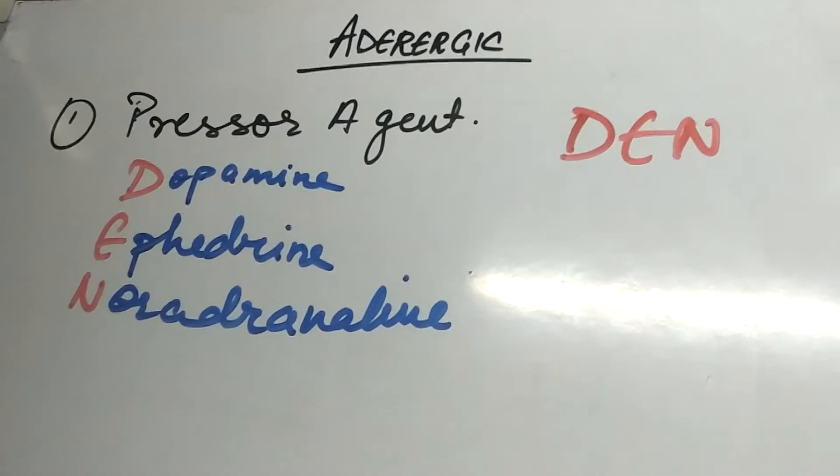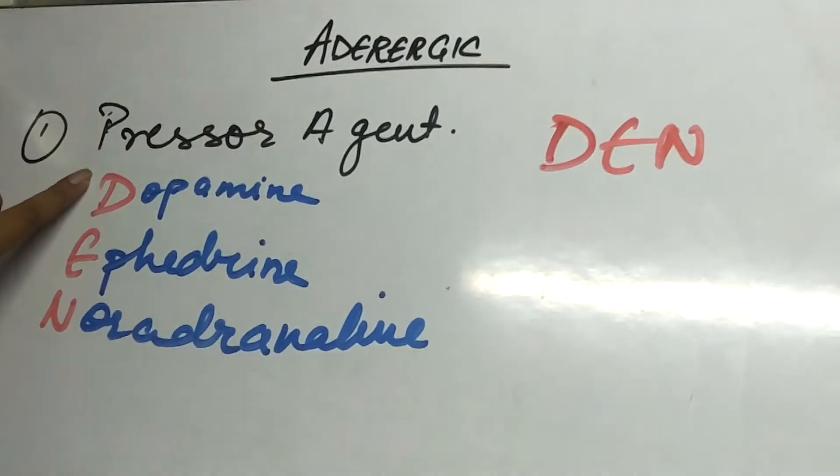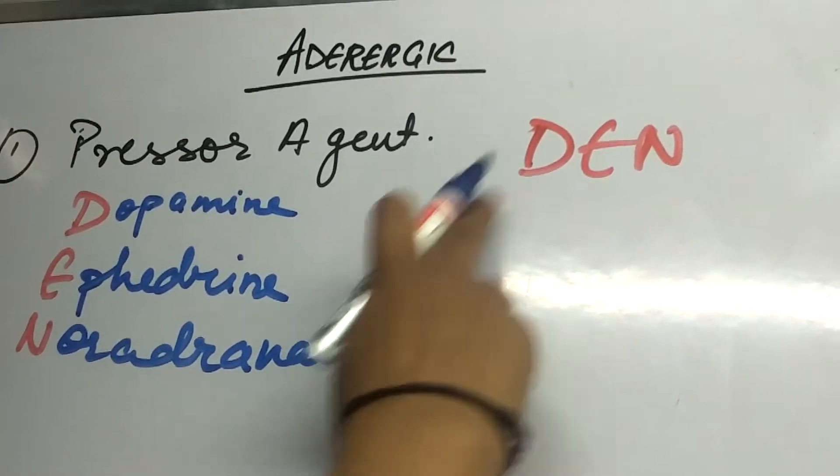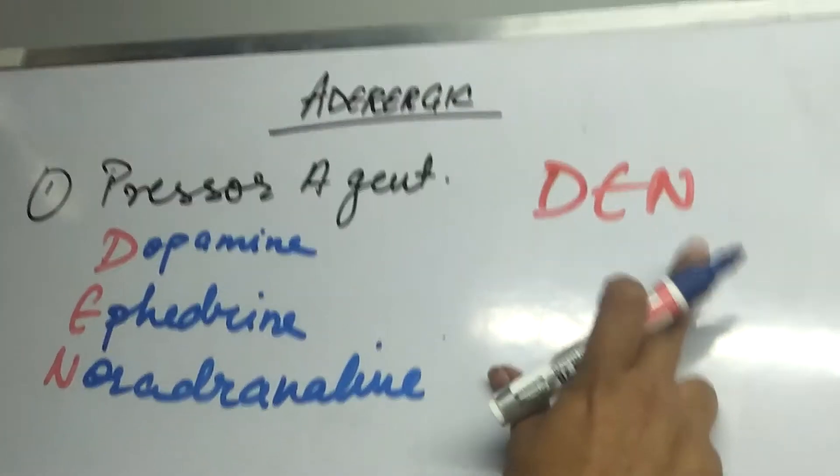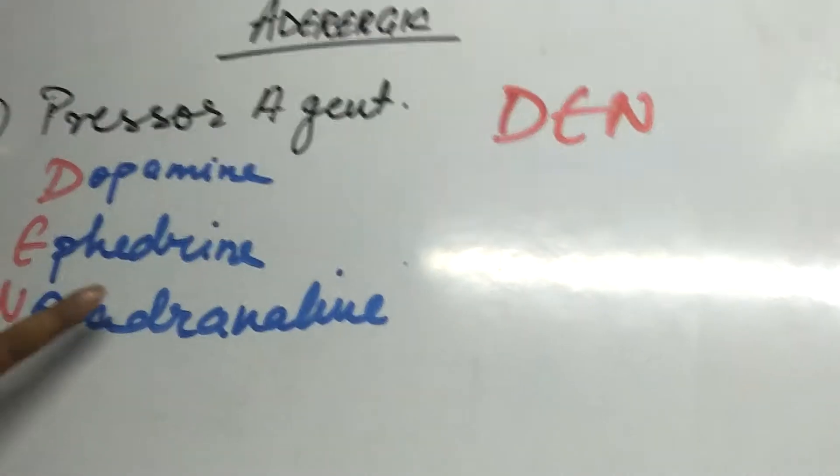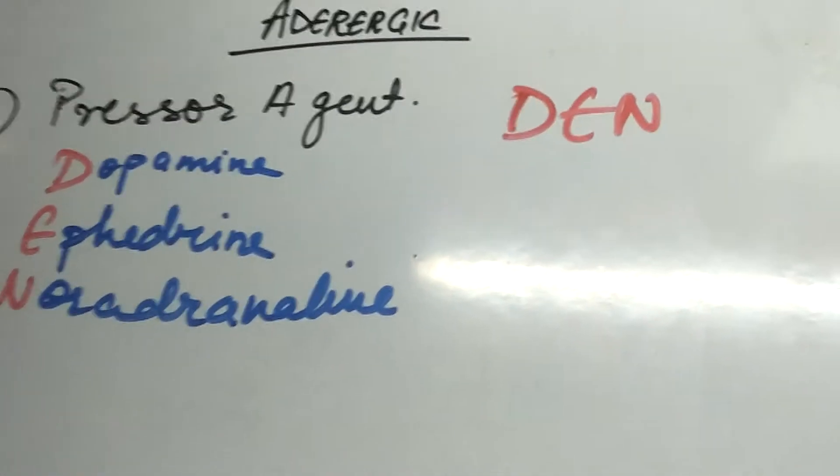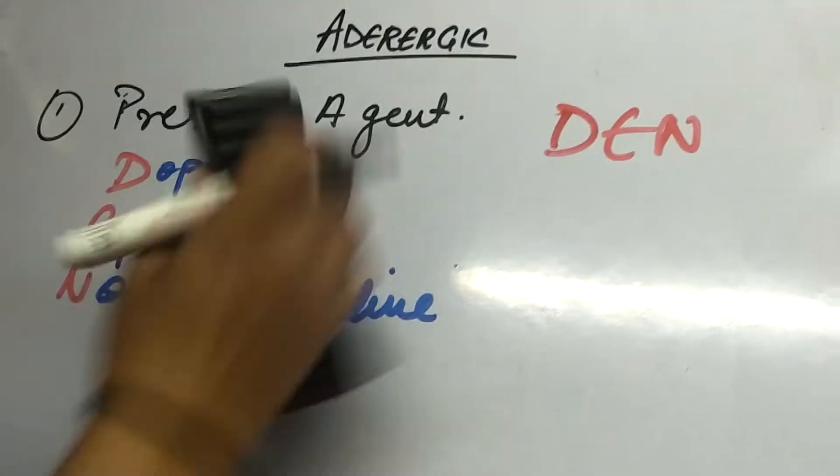We are going to do adrenergic classification. The first class is pressor agents whose mnemonic can be DEN. From D it is dopamine, from E ephedrine, from N noradrenaline.